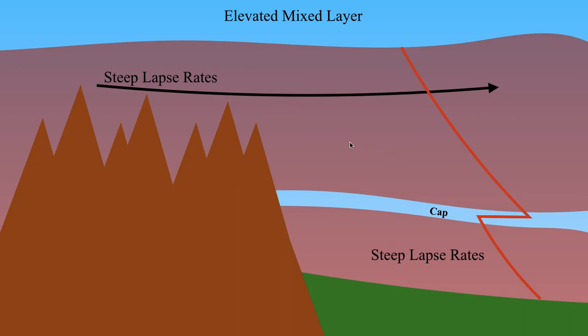That's going to do it for this segment on the elevated mixed layer. Again, just a look at how the unique topography of the plains plays a very unique role in severe weather setups. In the next segment, we're going to take a look at some of the features in the atmosphere that we look for when diagnosing flash flooding events. So with that, I will see you all in the next segment.